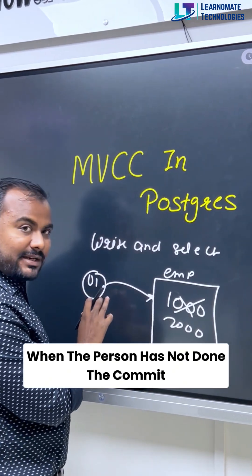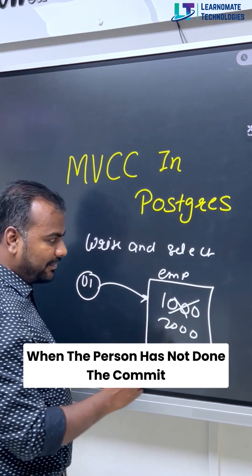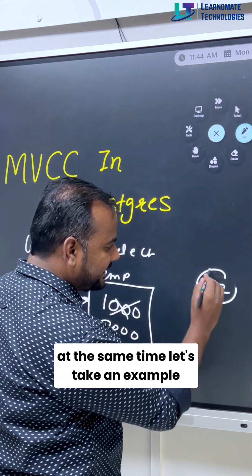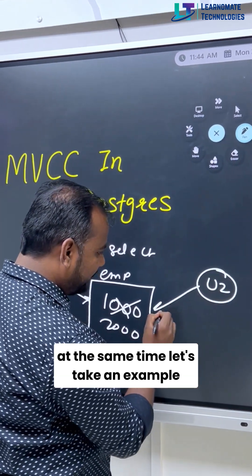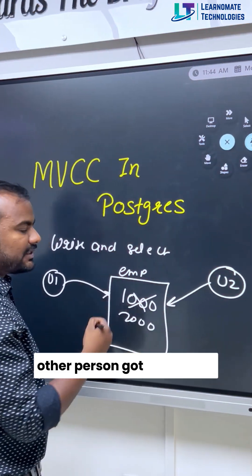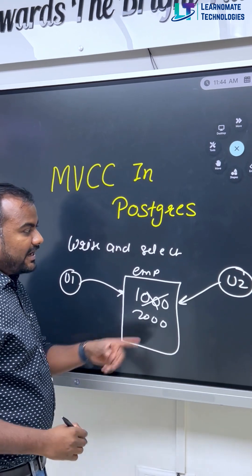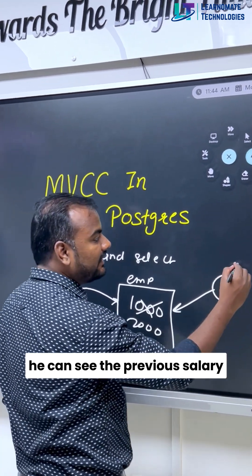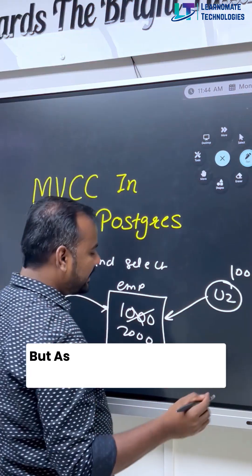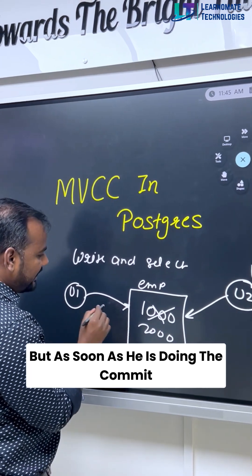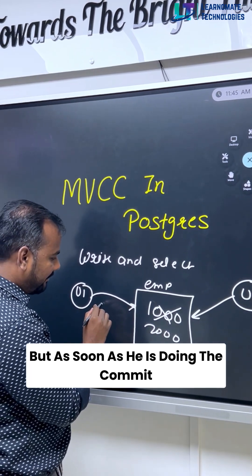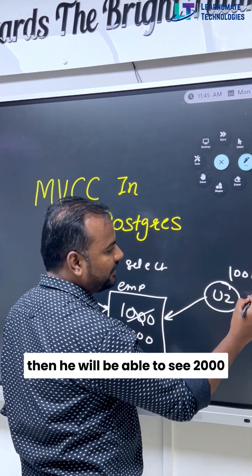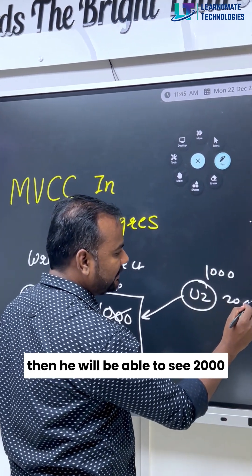When the person has not done the commit, at the same time, another person got connected. He can see the previous salary, which is 1000. But as soon as user one does the commit, then user two will be able to see 2000.